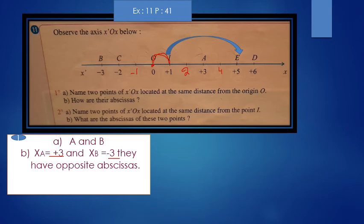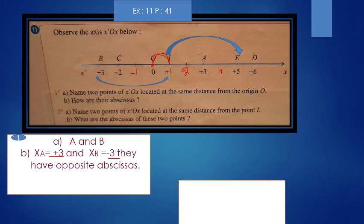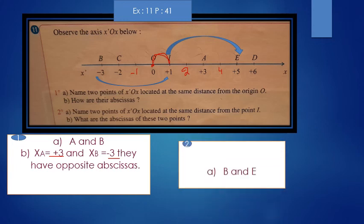From I to E, the distance is 4. From I to B, the distance is also 4. So, I can say that B and E have the same distance from point I. In other words, B is symmetrical to E with respect to I, or E is symmetrical to B with respect to I. Which means that I is the midpoint of BE.